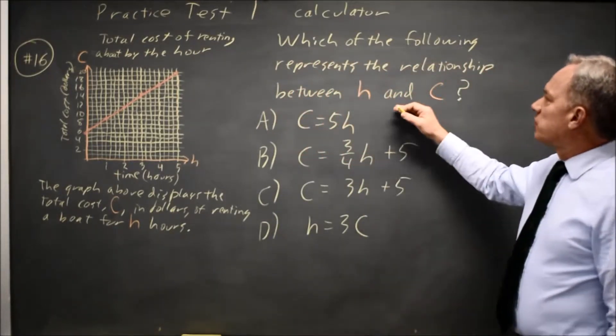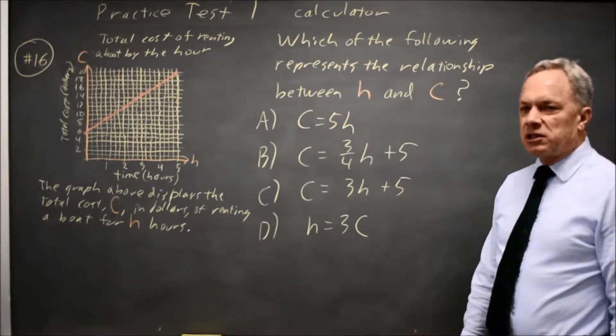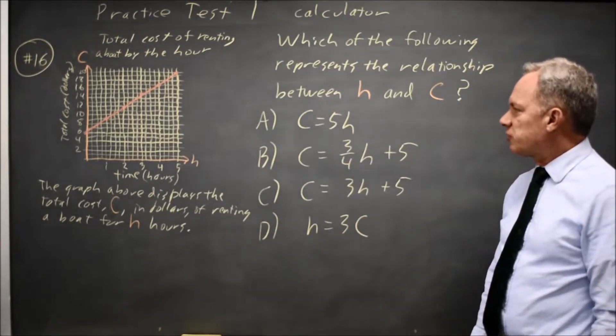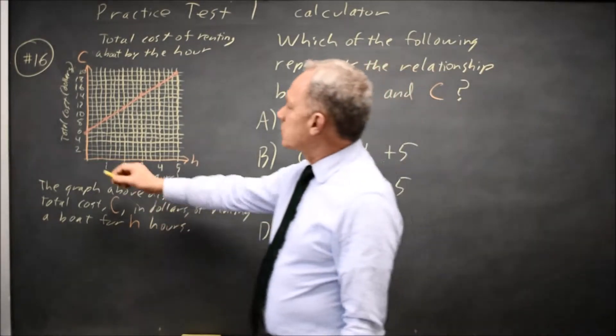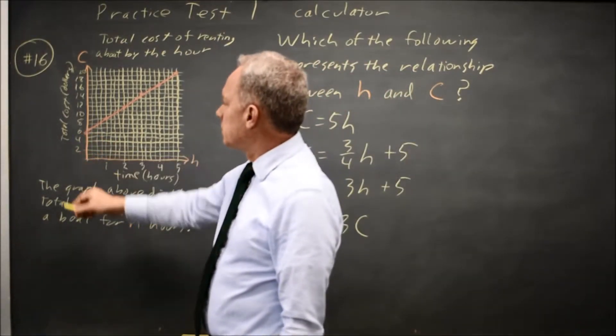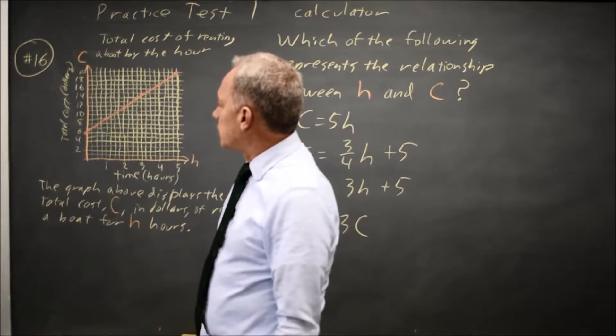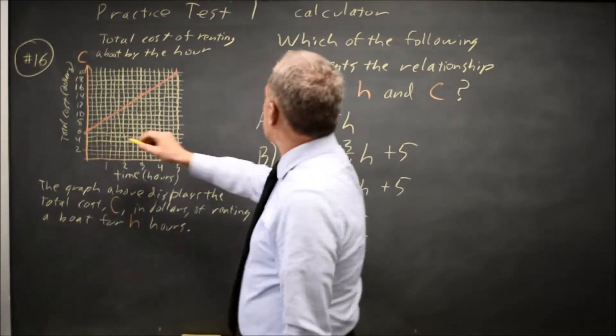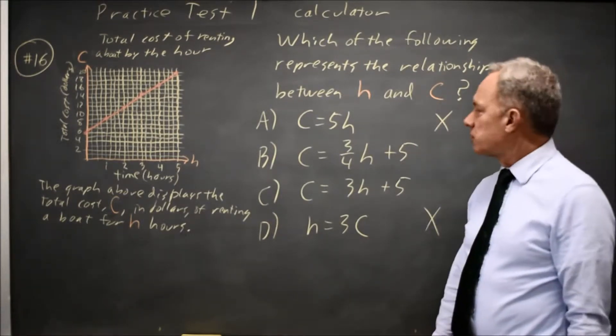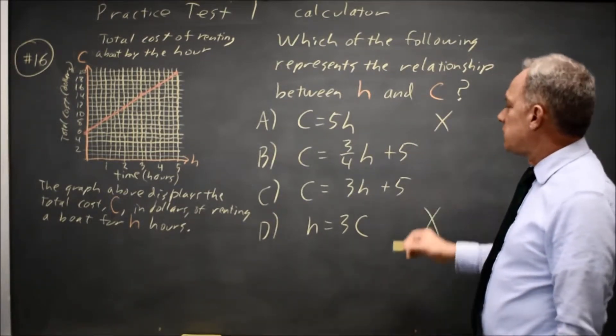And they ask, which of the following represents the relationship between H and C? And we have four linear equations for this linear graph. I first noticed that the vertical intercept, the C intercept, is 5. Choices A and D have an intercept of 0, so they're incorrect. It's either B or C.